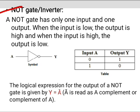The first one is the NOT gate. A NOT gate has only one input and only one output. When the input is low, the output is high, and when the input is high, the output is low.